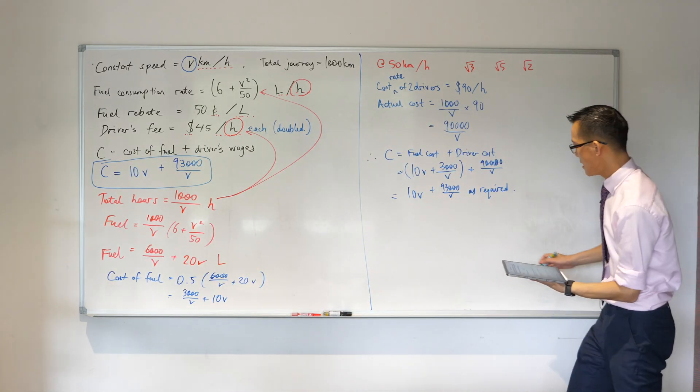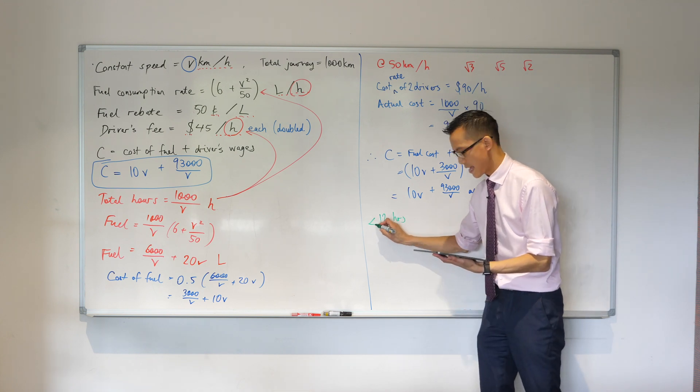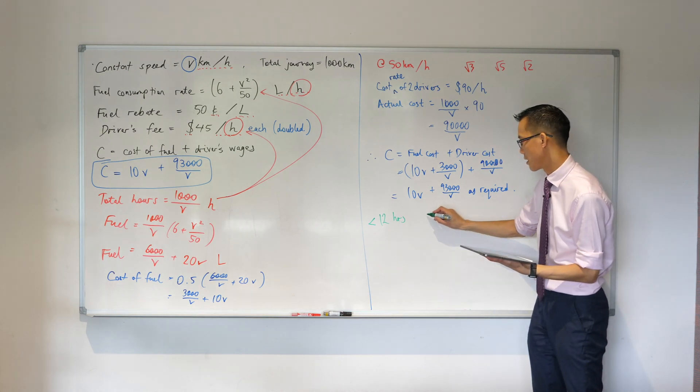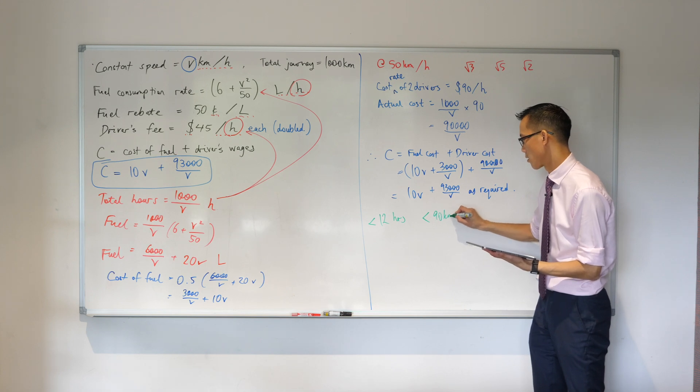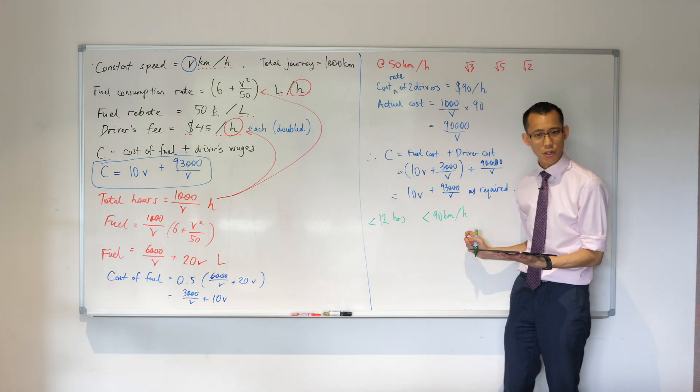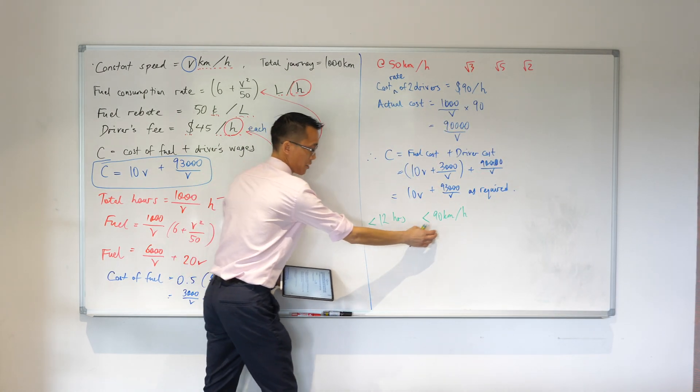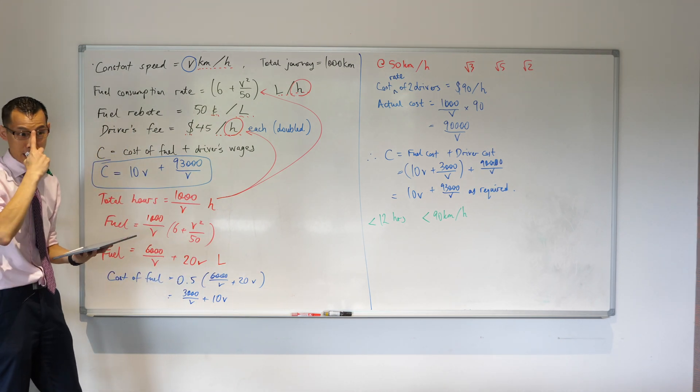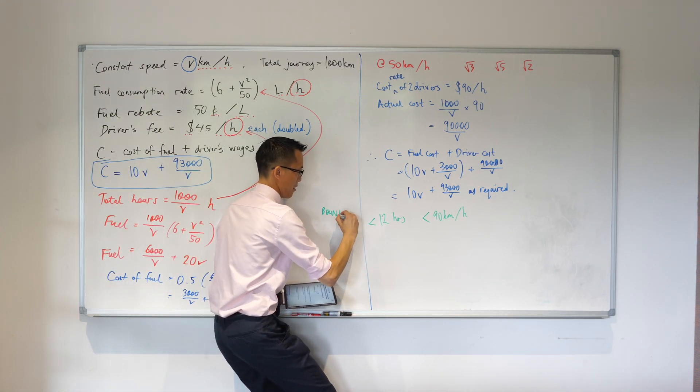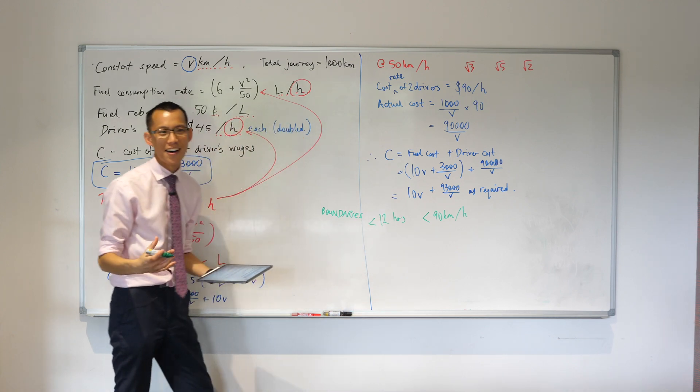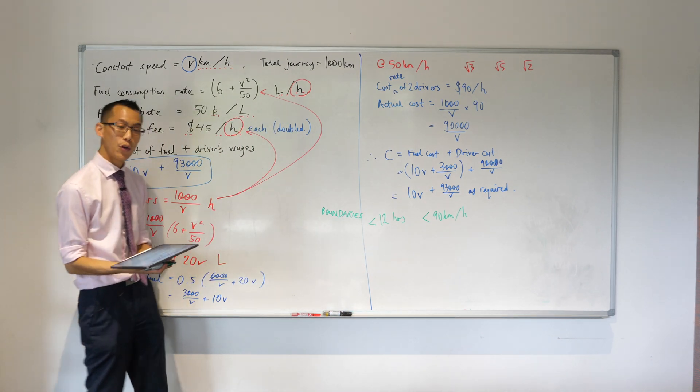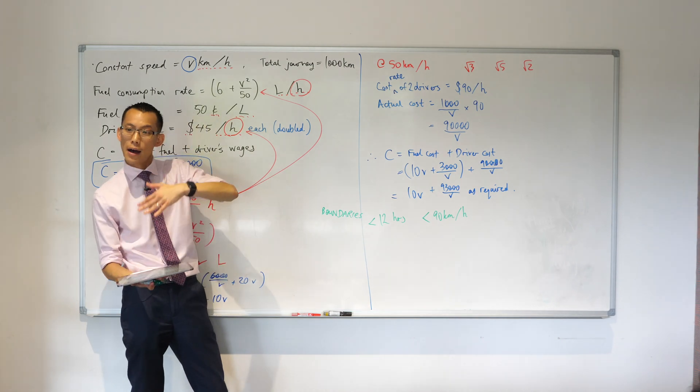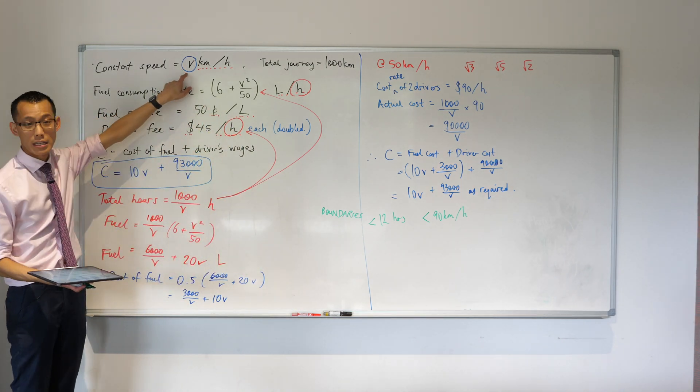Whilst remaining under the speed limit of 90 kilometers per hour. So what this is giving us - there's a name for this, these two pieces of information. It starts with a B. These are called boundaries. We don't have a car that can go infinite kilometers per hour, and we also don't have an infinite amount of time. You can't just go at one kilometer per hour and take forever. These set out upper and lower boundaries for what values we can put into this speed.